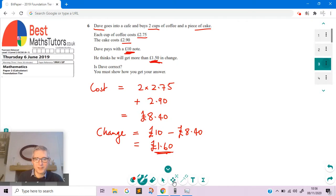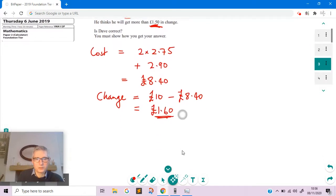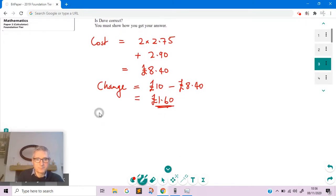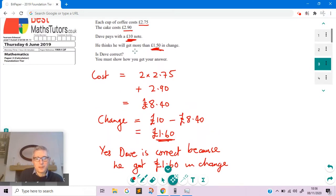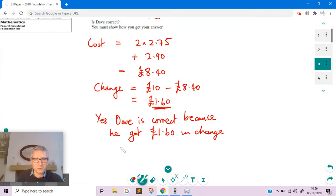We might think we've finished, but we have to be very careful. What we've got to do is actually answer the bit that says, is Dave correct? We usually might want to give a reason as well. We'd say yes, Dave is correct. He is correct because he got £1.60 in change, so he got more than £1.50. That's what we've been asked.